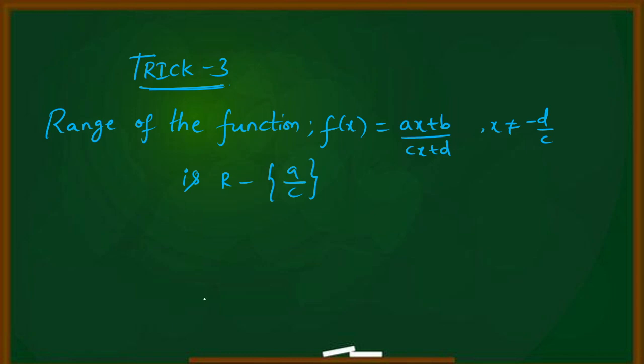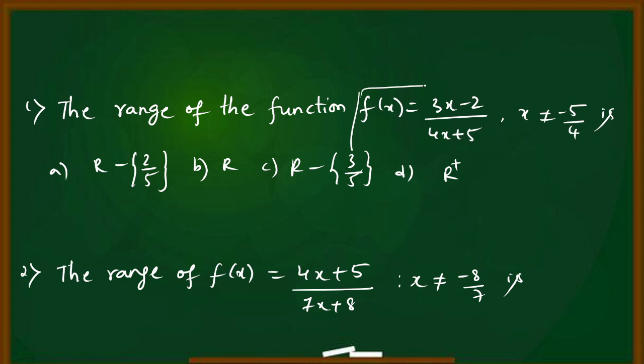Trick number 3: Range of function f(x) = (ax+b)/(cx+d). When the question is in this form, the range is directly R minus {a/c}. Example question: The range of function f(x) = (3x-2)/(4x+5), where x should not equal -5/4. The range is R minus a/c. a is 3 and c is 4, so R minus {3/4}. Option c, R minus {3/4} is the correct answer.